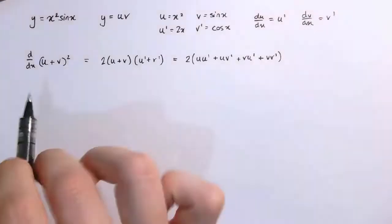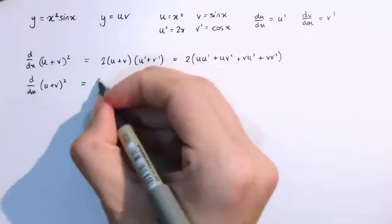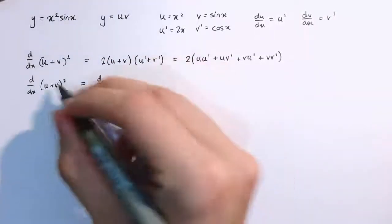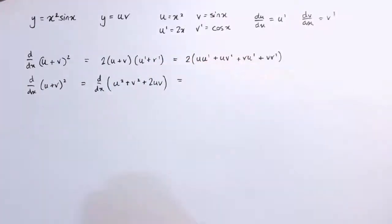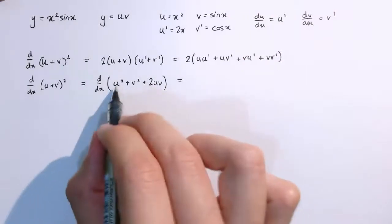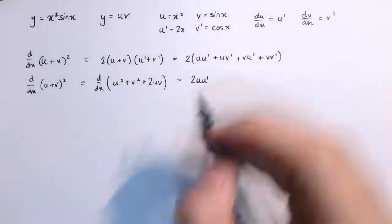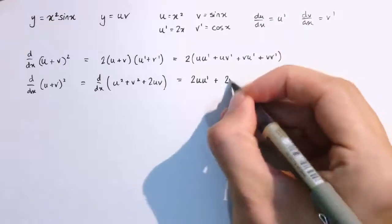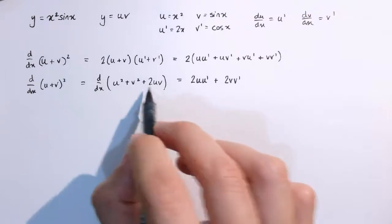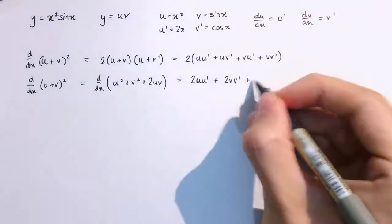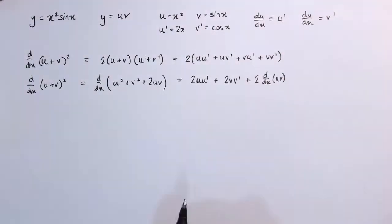I could also differentiate this in another way. The derivative of u plus v all squared is the derivative of u squared plus v squared plus 2uv when multiplied out. Differentiating term by term: differentiating u squared by the chain rule gives 2u·u dashed, and differentiating v squared gives 2v·v dashed. This bit — differentiating u times v — is exactly what we're trying to prove, so I'll leave that as 2 times the derivative of u times v.